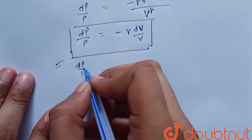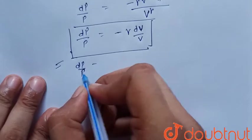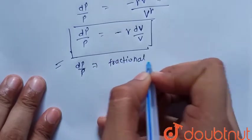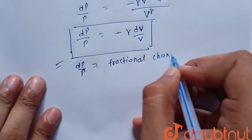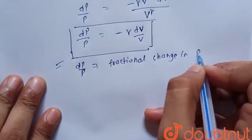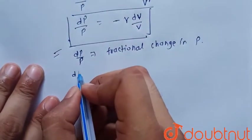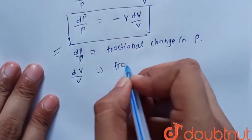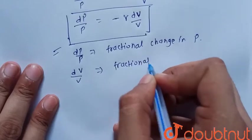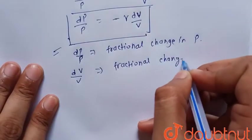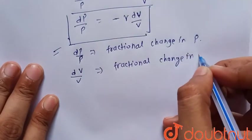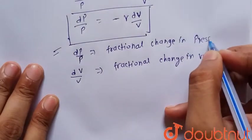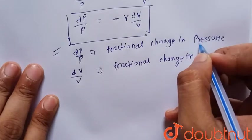dP upon P is equal to minus gamma dV upon V, where dP upon P is the fractional change in pressure, and similarly dV upon V is the fractional change in volume.